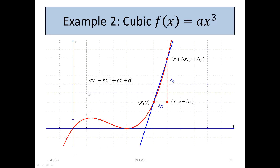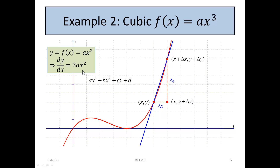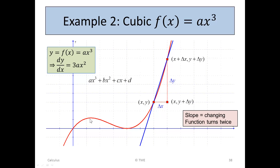Here's the example of the cubic — shown as ax cubed plus bx squared plus cx plus d, a general cubic. We can see it turns once and then again; cubic functions turn twice. The point (x, y) and (x plus delta x, y plus delta y) are shown, and at this point the slope is quite high — the blue line is showing quite a high slope. Without first principles, we would say dy/dx of ax cubed equals 3ax squared: keep a, take down the 3, and reduce the power by 1. The slope is changing depending on where you are on the curve, and the function turns twice for a cubic.